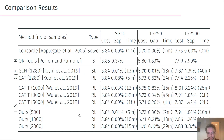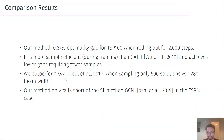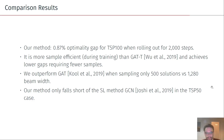Looking at the results — ours being at the bottom — our method outperforms previous methods for TSP20 and TSP100, and we are more sample-efficient than the methods proposed by Wu et al. For the TSP100 case we achieve better optimality gaps while requiring fewer samples. We also do slightly better than Kool et al., outperforming their solution using only 500 solutions versus the 1,280 they use, and we only fall short of Joshi et al. for the TSP50 case.